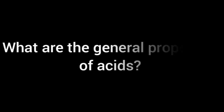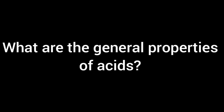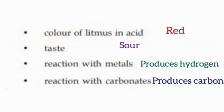What are the general properties of acid? The color of litmus in acid is red. The taste of acid is sour. Reaction with metals produces hydrogen. Reaction with carbonates produces carbon dioxide.